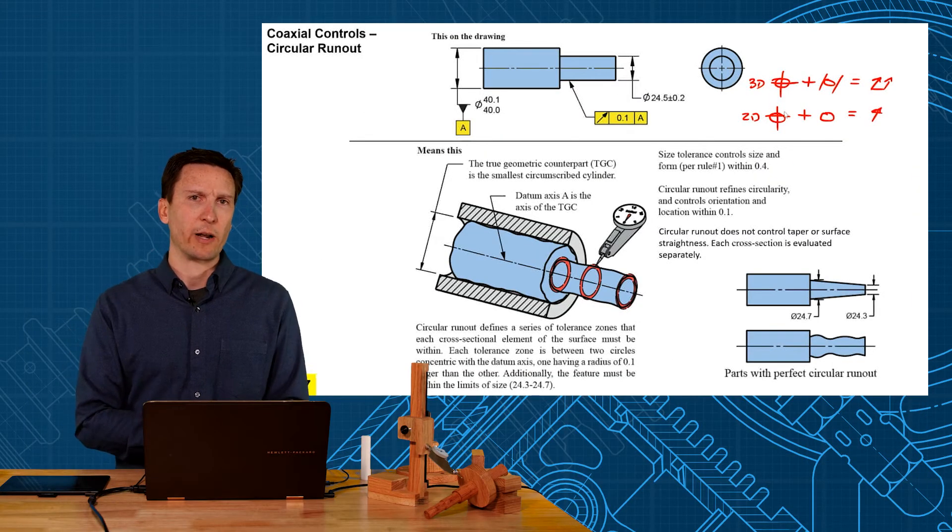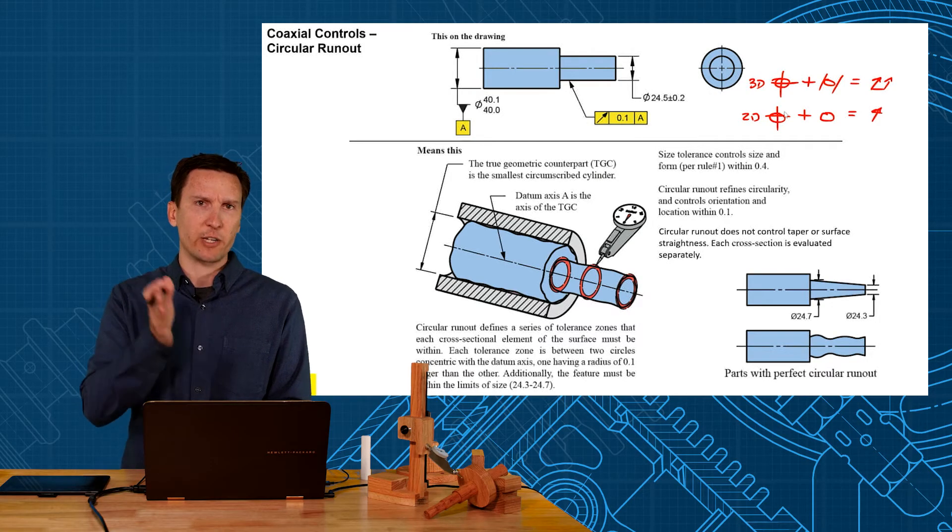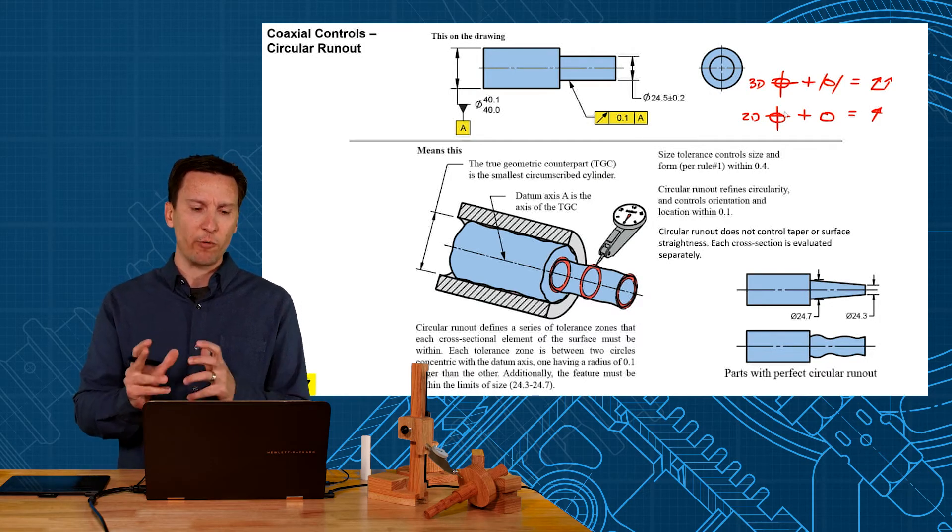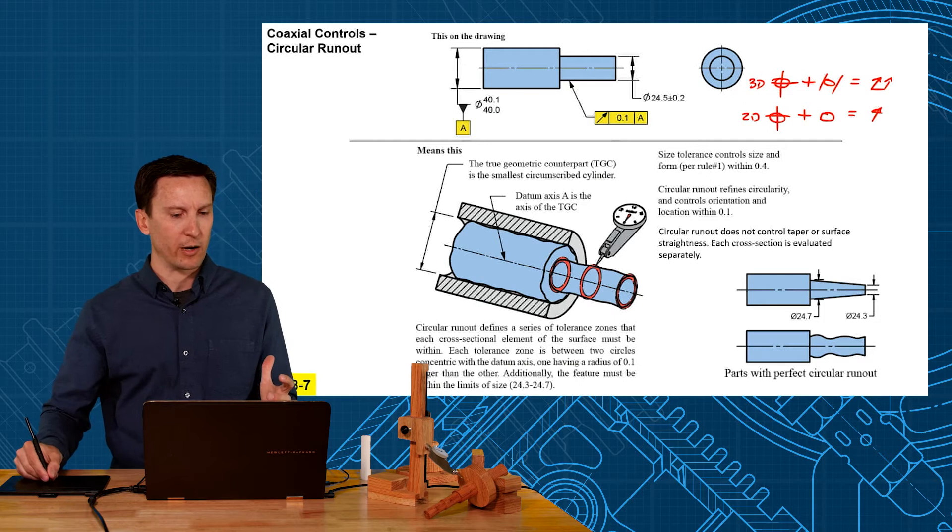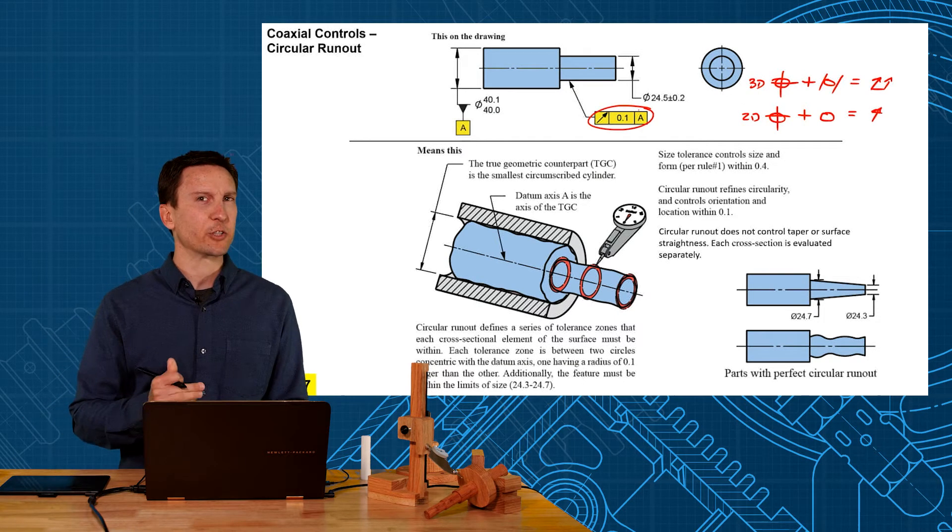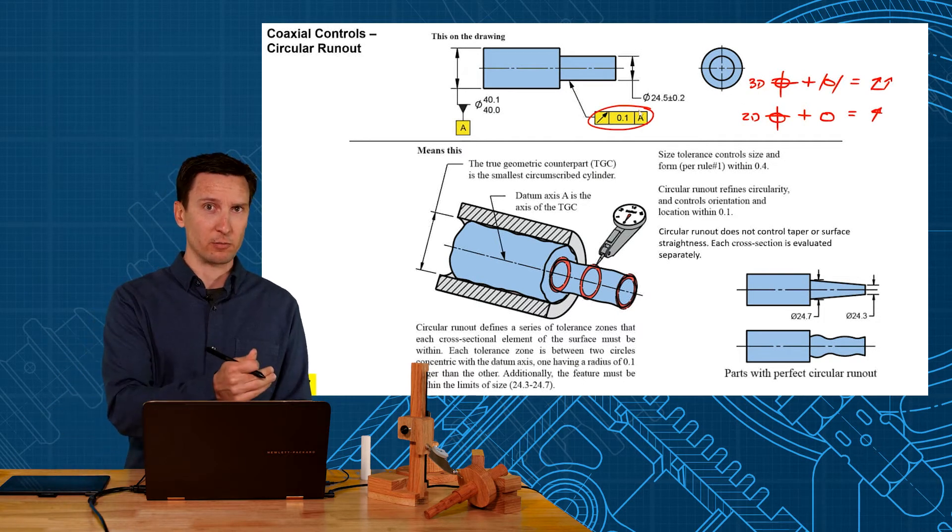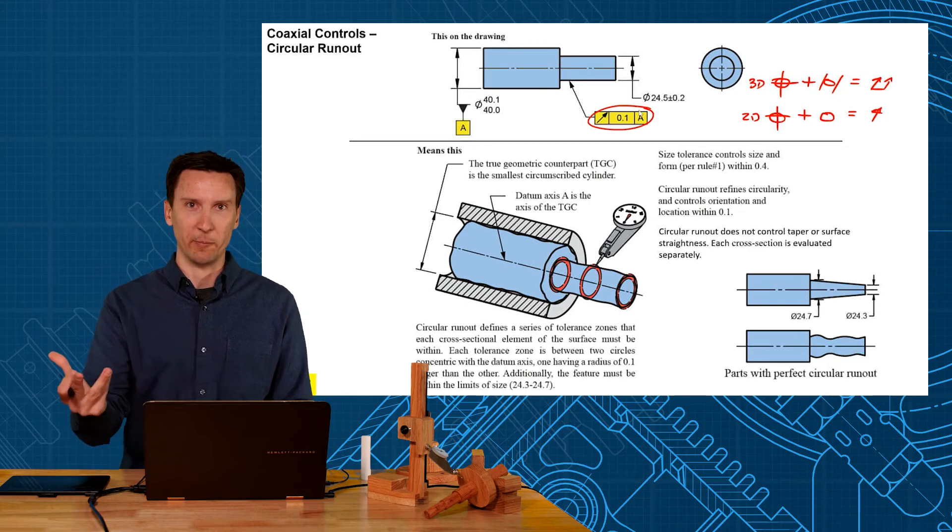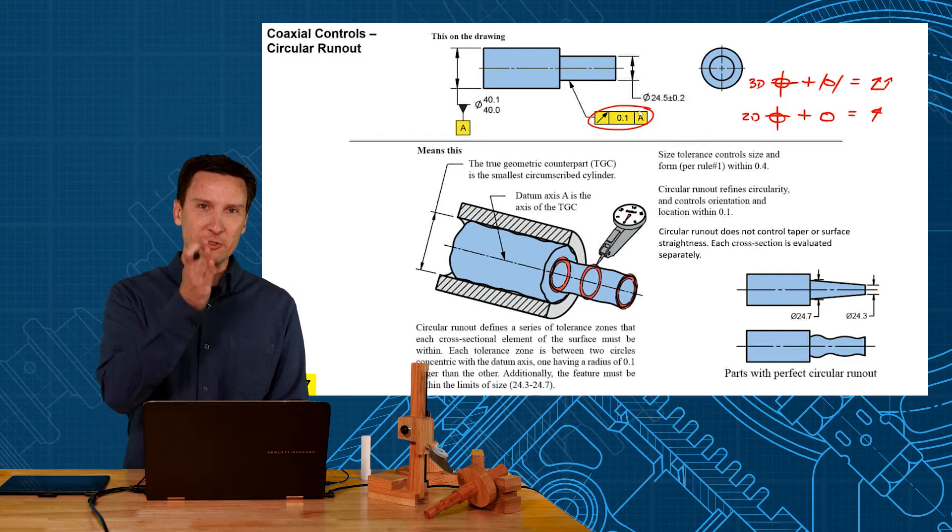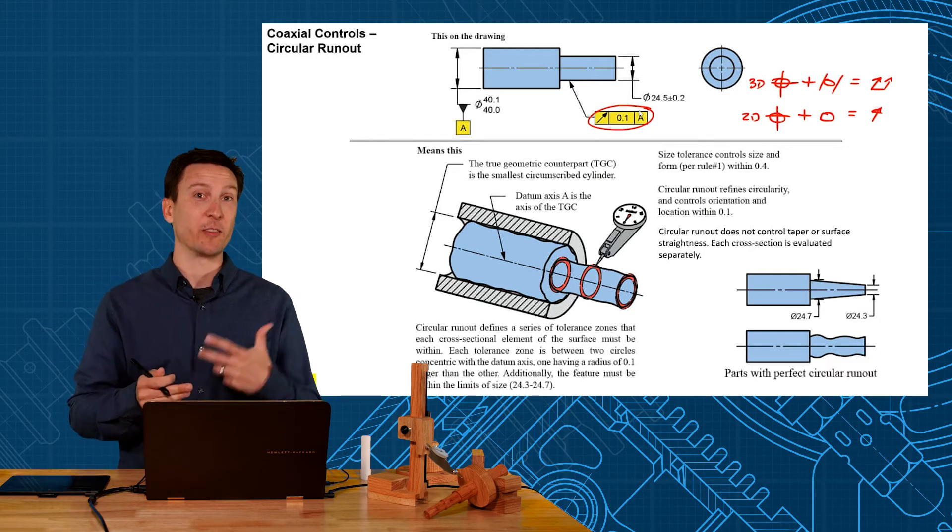A question I get with runout sometimes is how many cross sections do I measure? Well first when I say circular runout here how many cross sections have to be within the tolerance? All of them. My specification says all cross sections have to be within the tolerance zone.